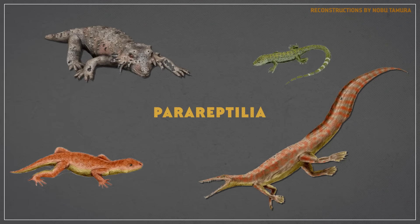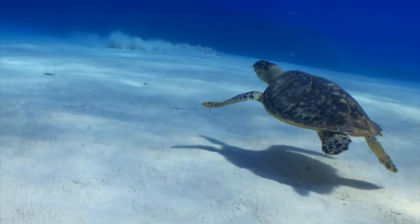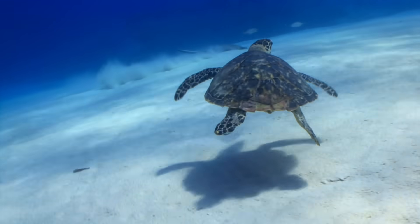These are some of the earliest reptiles, all of which are now extinct. Like the spiky-cheeked Procolophonids and the Mesosaurs, which were probably the first aquatic reptiles. Now, by and large, which clade you put turtles in depends on where you think its shell came from.